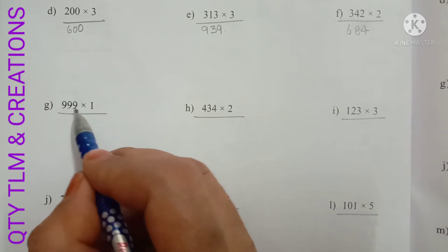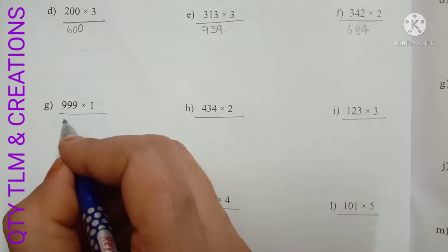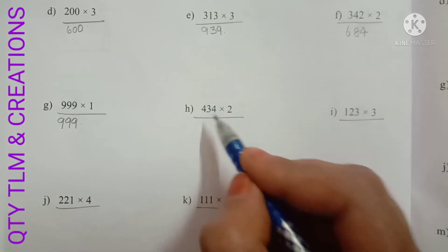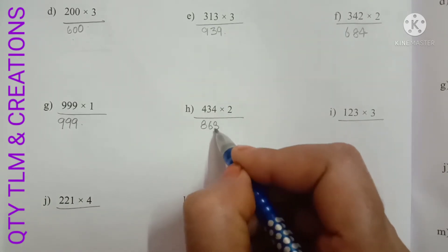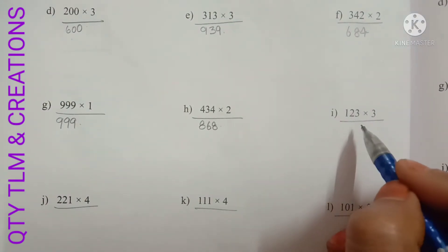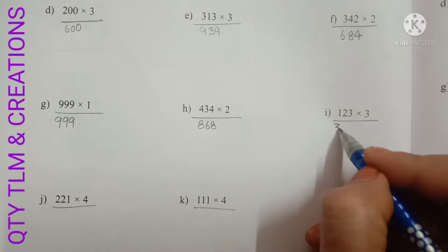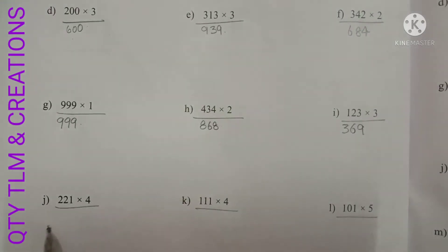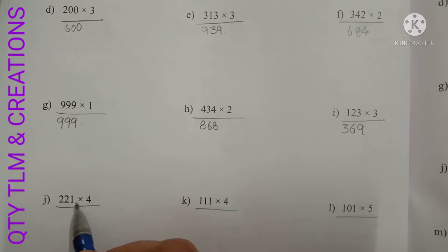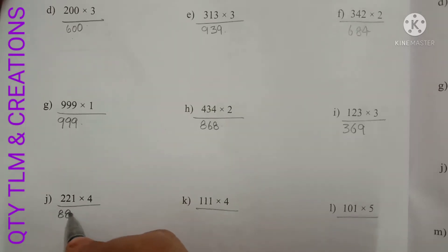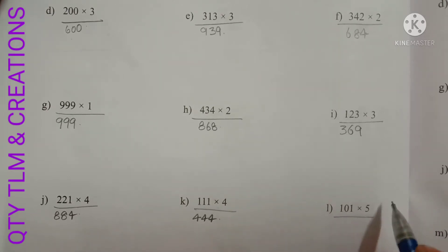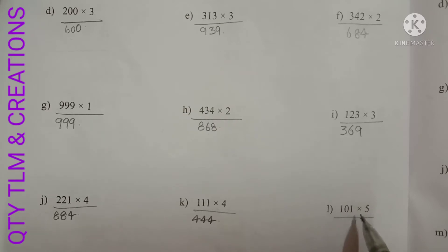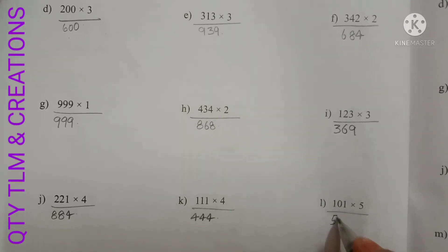Next G: 999 into 1, we will get 999. Next H: 434 into 2, we will get 868. Next I: 111 into 2, we will get 222. Next K: 111 into 4, we will get 444. Next L: 101 into 5, that equals 505.